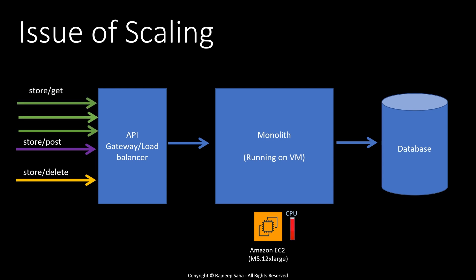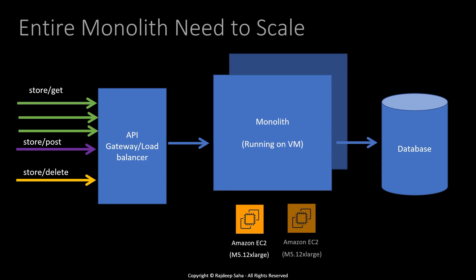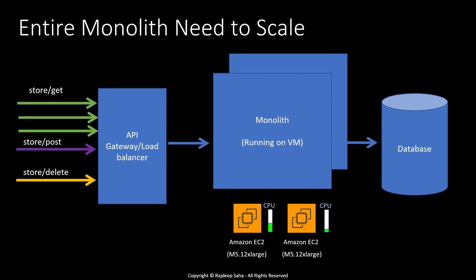Let's say traffic for store/get increases and CPU hits a threshold limit. If you have an auto scaling group configured and the threshold is exceeded, instead of scaling just the CPU needed for the store/get component, you have to scale the entire monolith — because you cannot pick apart different components to run on different EC2s with the monolith approach. So now you have two m5.12xlarge EC2s running. Even though you are only using part of the CPU, you still pay full price for those large EC2 instances, so you end up paying a lot more.